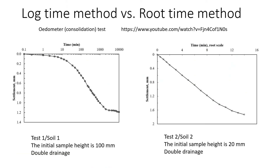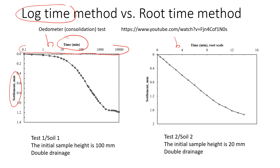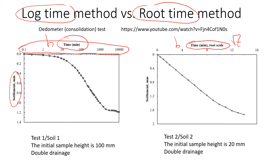When we conduct oedometer tests, we apply load to a soil sample and measure settlement over time. We draw a graph of settlement — or change in height of the sample — versus time. There are two different methods to analyze the data: the log time method, where data is plotted on a log scale, and the root time method, where time is plotted as the square root of time.